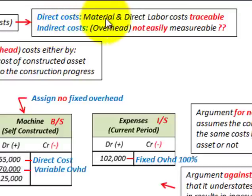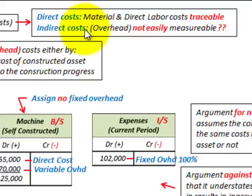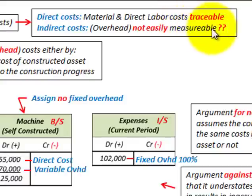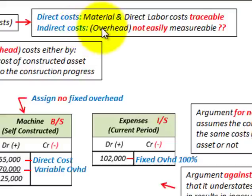For our direct costs, that would be our material and our direct labor, and those costs are easily traceable. Our indirect costs are overhead costs — those costs are not easily measurable or traceable. So the question we have to determine is: what are our indirect costs and how are we going to charge them off?